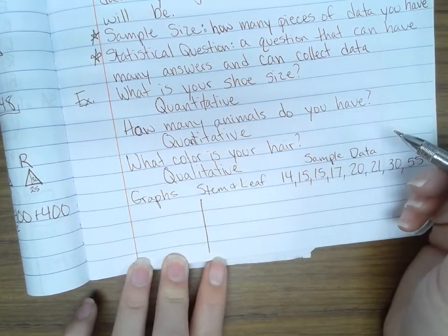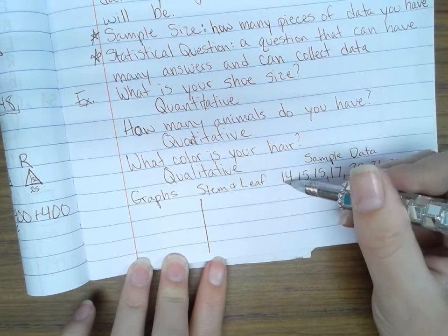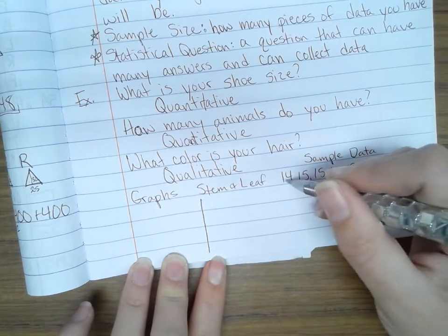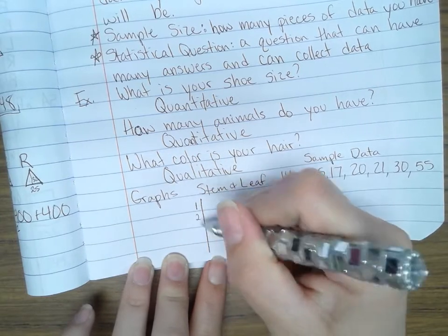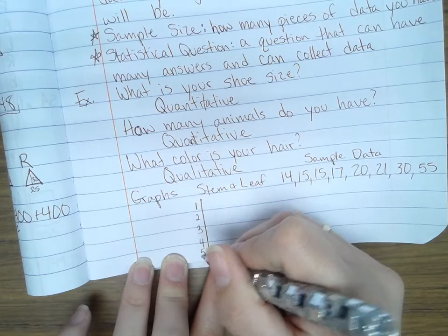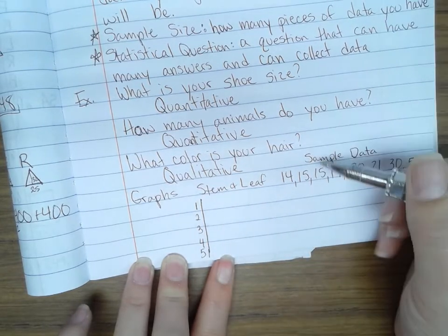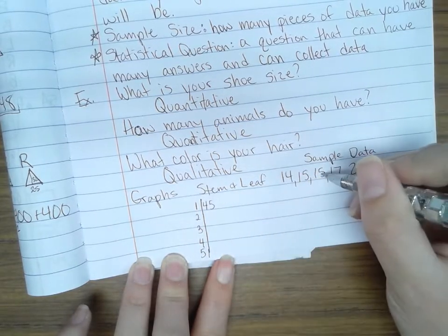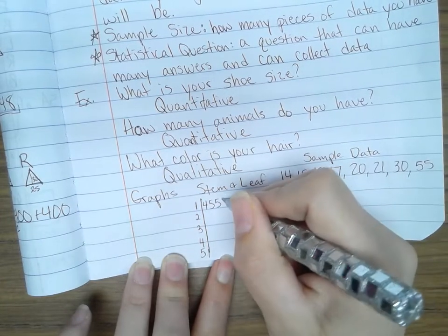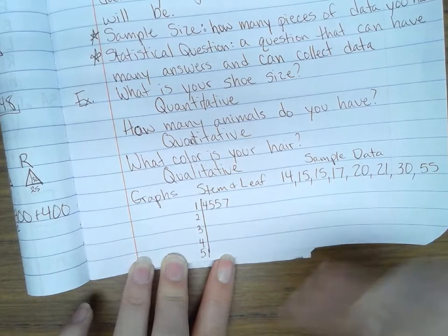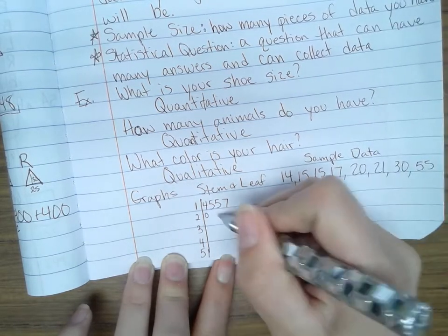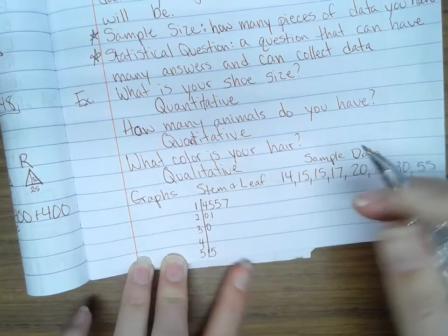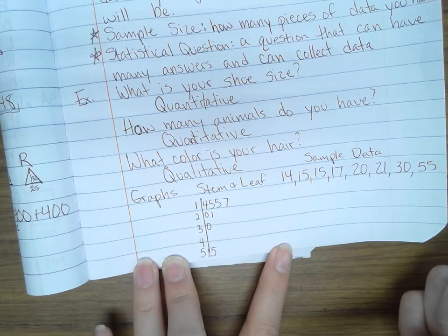Because you're going to see this I just want you to be familiar with it. The stem and leaf plot takes the trunk of the numbers, meaning not the ones. So the trunk here would be tens. I start at 14 and I have to go all the way up to 55. So I'm going to write 1, 2, 3, 4, and 5. And here I have 14, so I'm going to write a 4 there. 15, I have another 15, and 17. 20, I'll put a 0 here. 21, 30, and 55. Here is just a way to organize my data. A stem and leaf plot.